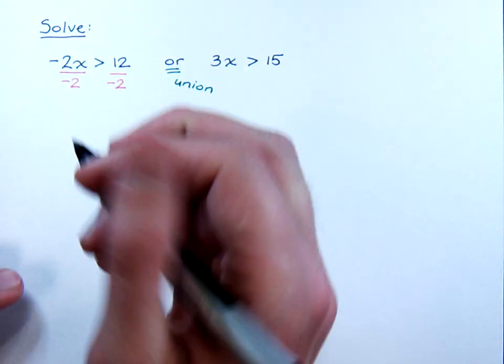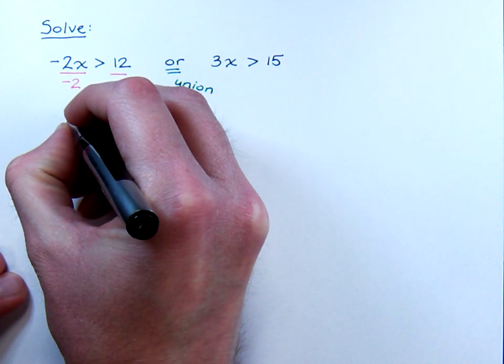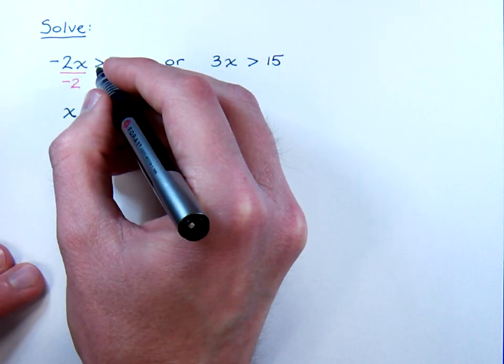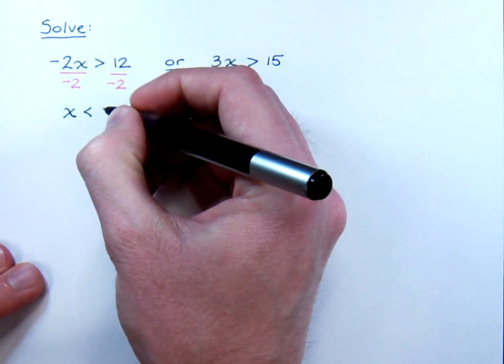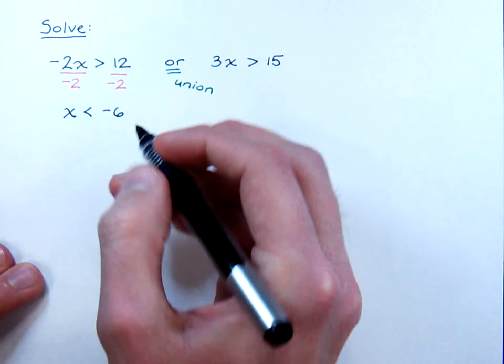But, man, can you believe that? We divided by a negative. If you guys remember from the other videos, that means that we have to switch the direction of the inequality. So this is not going to be greater than, it is now going to be less than. So x is now less than negative 6 for this first inequality.